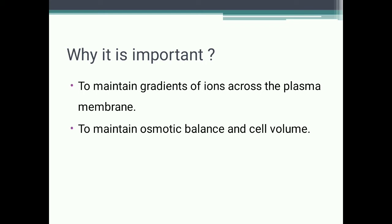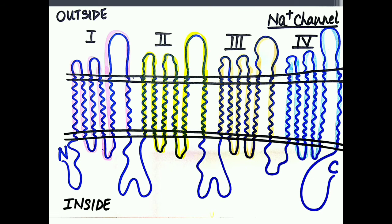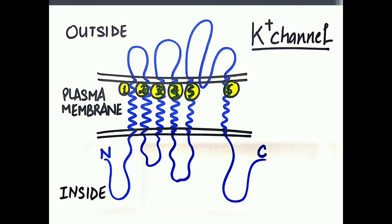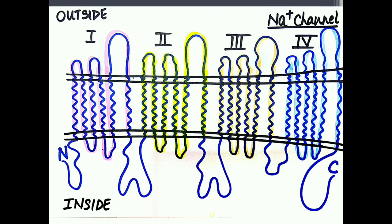This counterbalance, used to maintain ionic gradients, prevents water from moving in excessively by osmosis. Now let's move to the structure of the sodium potassium pump. There is a difference between the sodium potassium pump and sodium channels and potassium channels — the sodium channel and potassium channel are examples of ionic channels involved in facilitated diffusion.